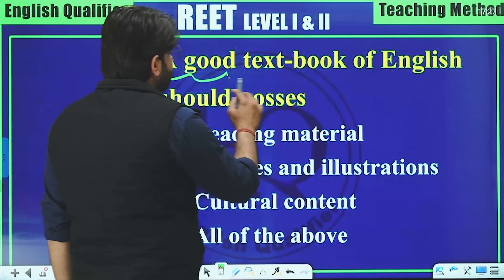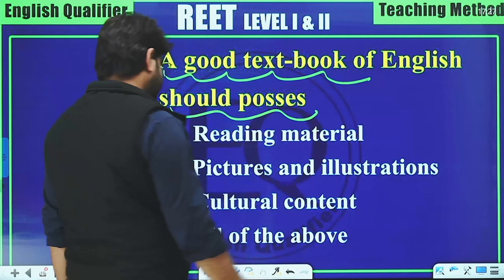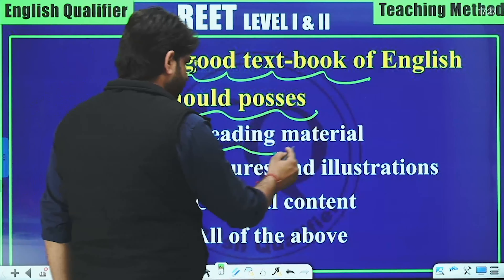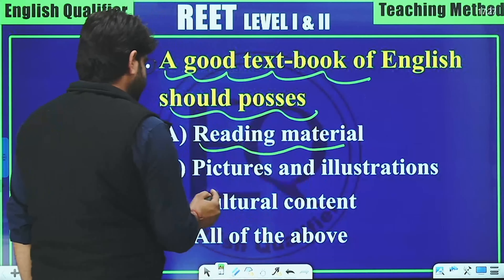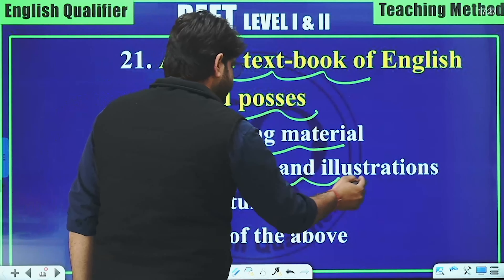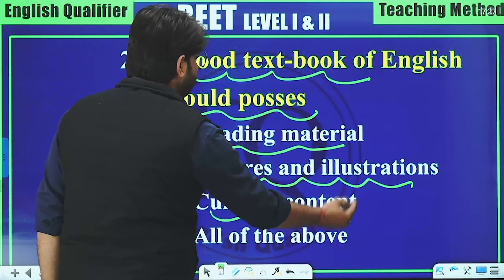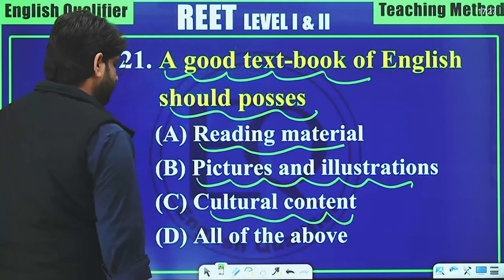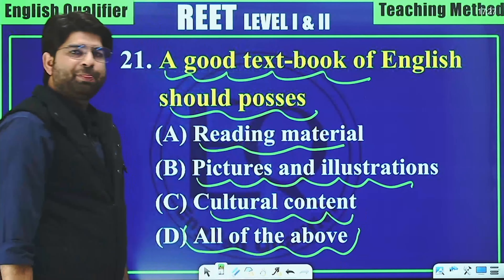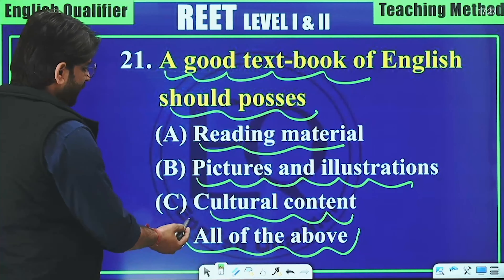Question 21: A good textbook of English should possess reading material, pictures and illustrations, and cultural content. Since all of these should be present, the correct answer is 'all of the above.'